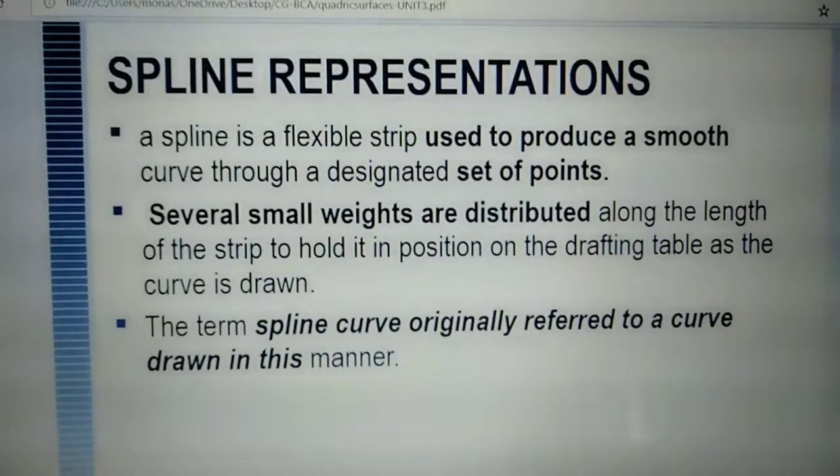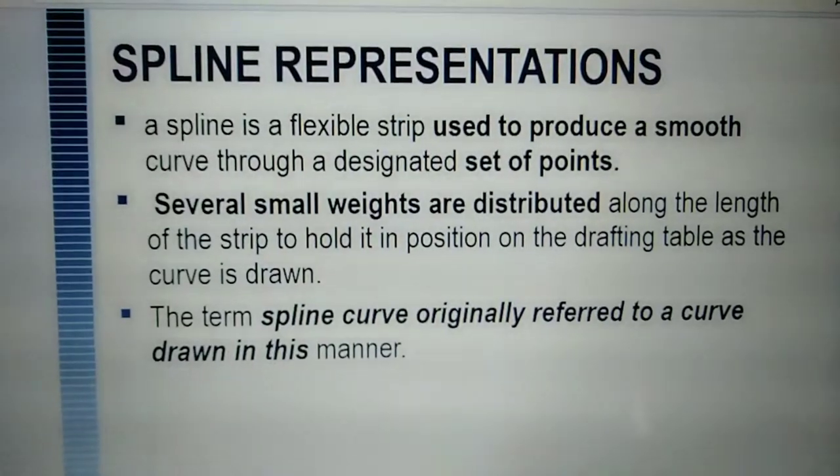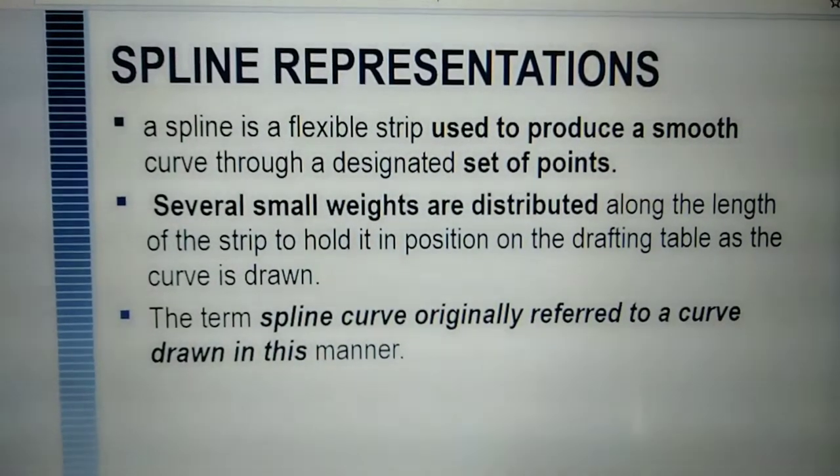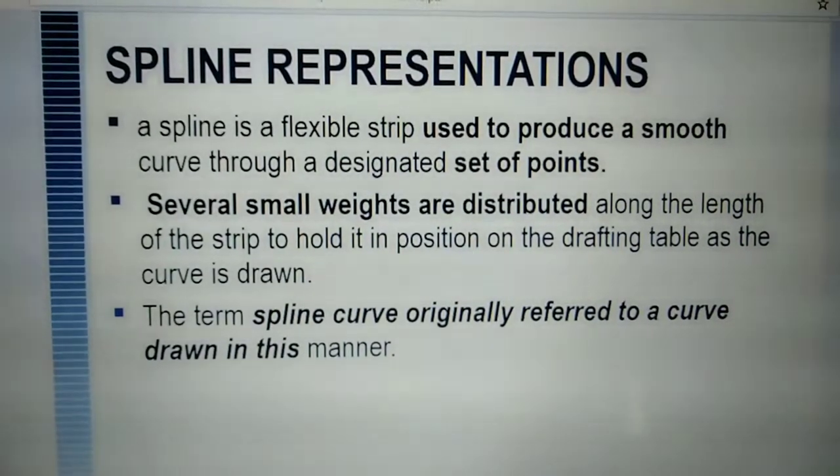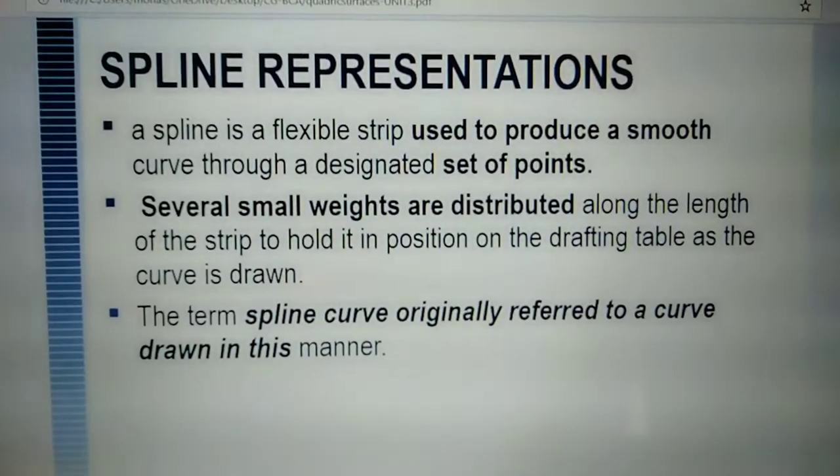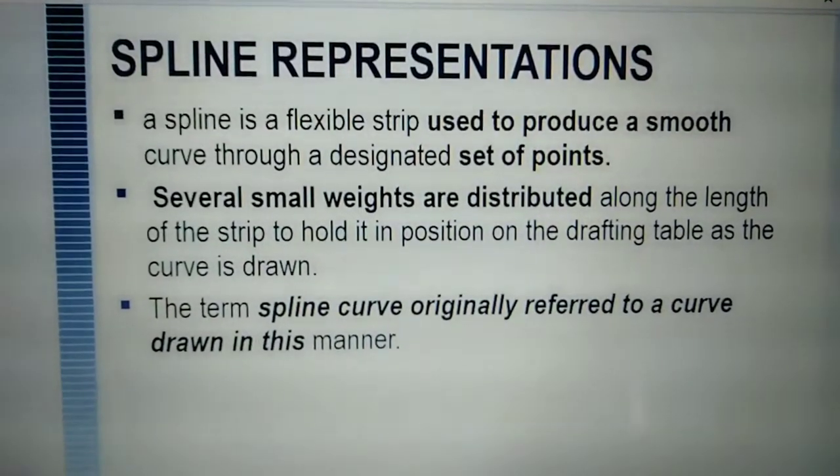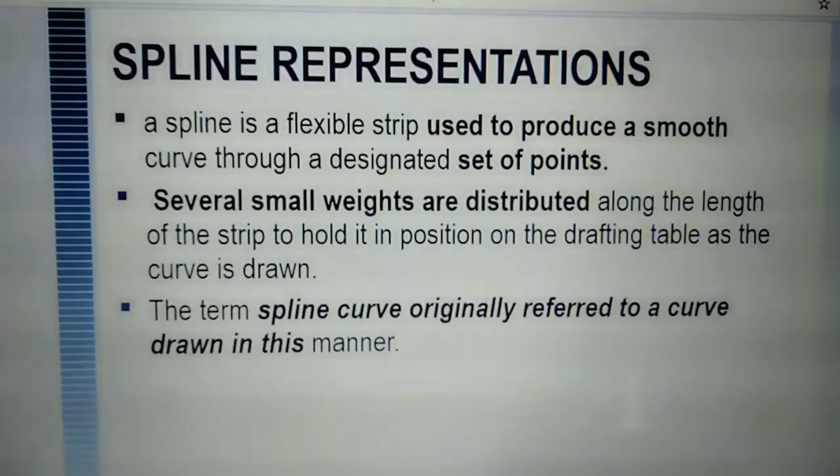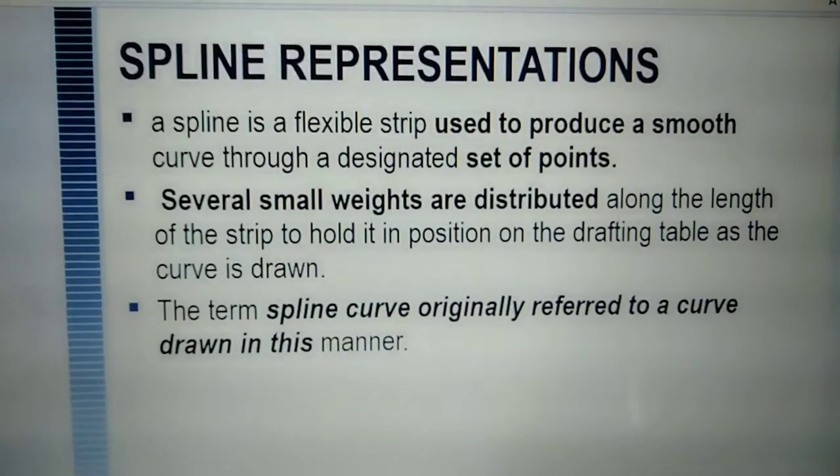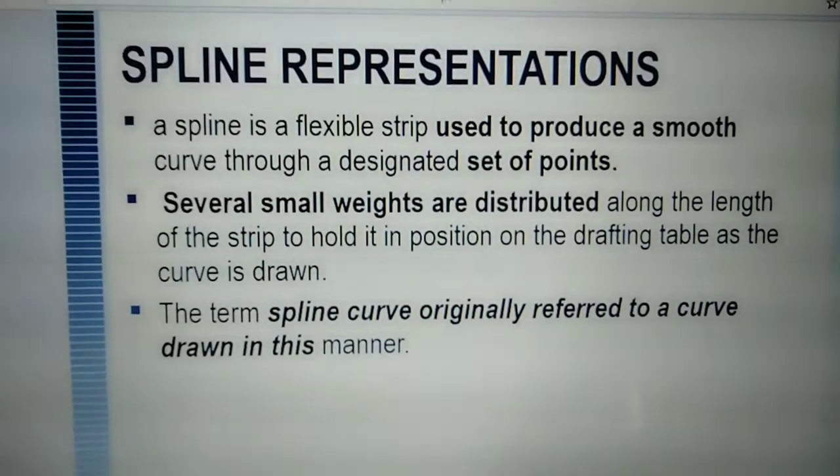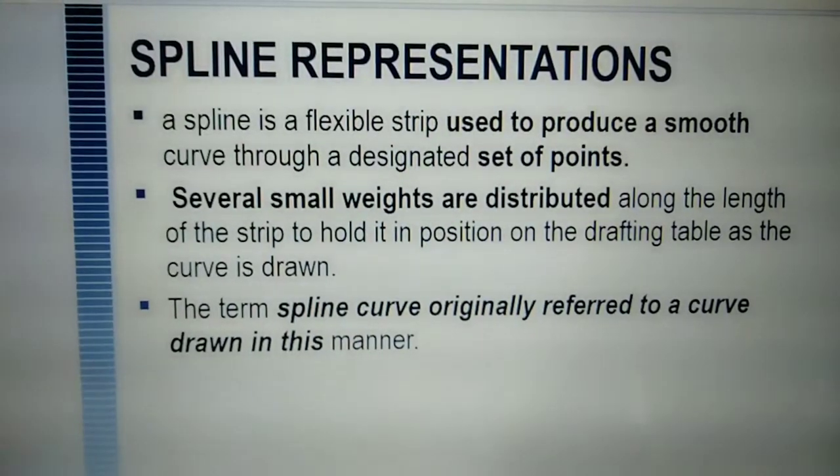In further slides you will see the diagram of a spline. Several small weights are distributed along the length of the strip to hold it in position on the drafting table as the curve is drawn. These weights, which we also call control points, are distributed along the length of the strip. You will see the diagram of this in further slides.